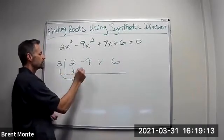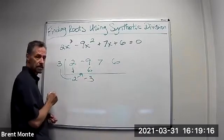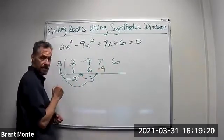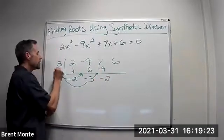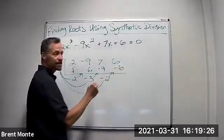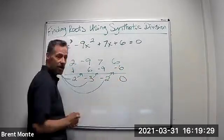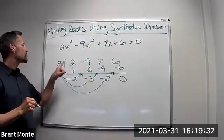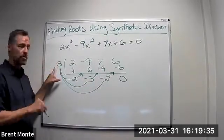3 times 2 is 6. Add down, we get negative 3. 3 times negative 3 is negative 9. Add down, negative 2. 3 times negative 2 is negative 6. Add down — this time we see we get a remainder of 0. So that means 3 is a zero or a root of the function.